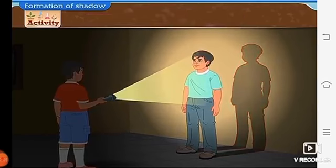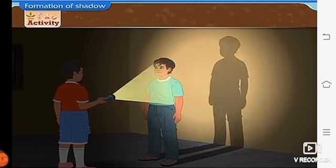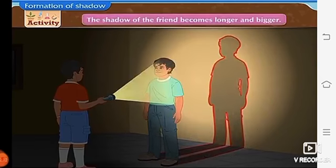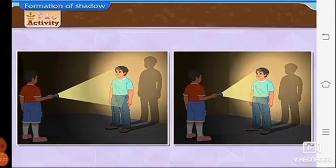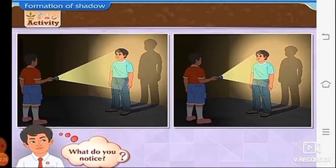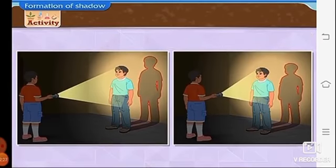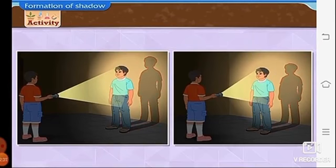Now, ask the friend to come towards you. What do you see? The shadow of the friend becomes longer and bigger. Next, you move further away from him and towards him again. What do you notice? The shadow of your friend changes its shape according to your movement. When you are away from the friend, the shadow is larger and when you are close to your friend, the shadow is smaller.